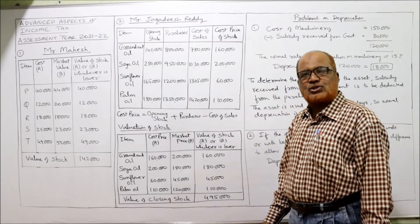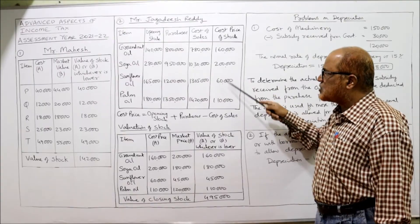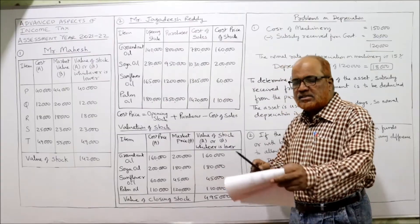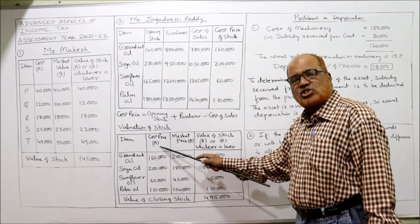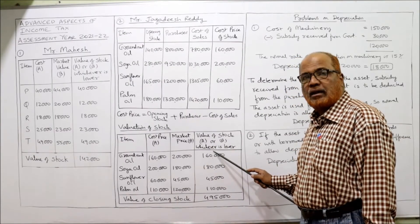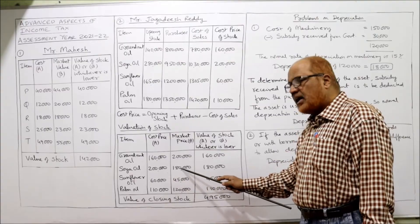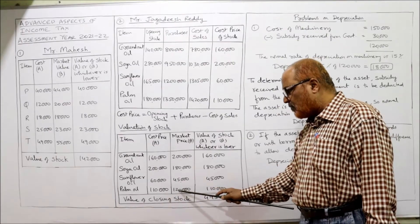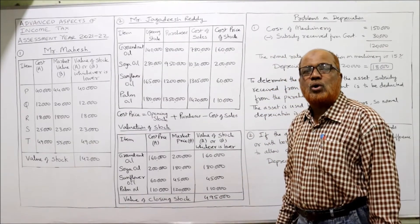Now for the valuation of stock, comparing cost price and market price for each oil: Groundnut oil — cost 1,60,000 vs market 2,00,000; take 1,60,000. Soya oil — cost 2,00,000 vs market 1,80,000; take 1,80,000. Sunflower oil — cost 60,000 vs market 45,000; take 45,000. Palm oil — cost 1,10,000 vs market 1,20,000; take 1,10,000. Total value of closing stock is 4,95,000.